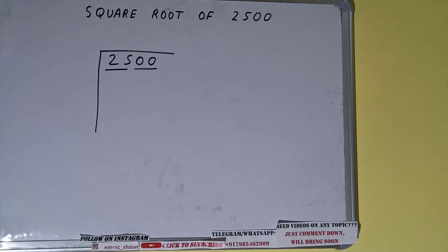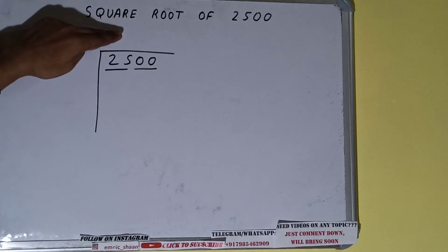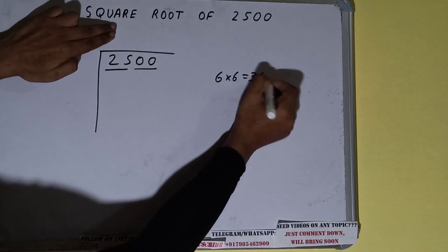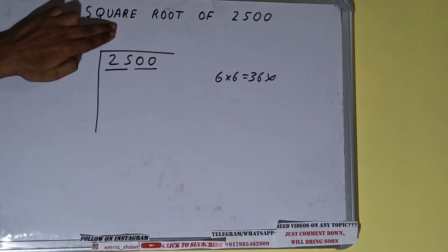The rule is whatever number we write here we have to write here also. So if we write 6 here and 6 here, we'll get 36 which is greater than 25, so we cannot use it. If we write 5 here and 5 here, we'll get 25 which is good to use.